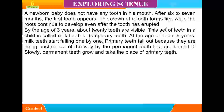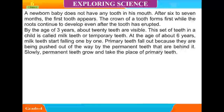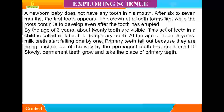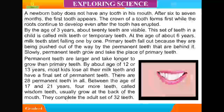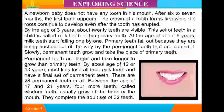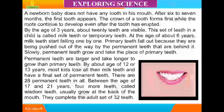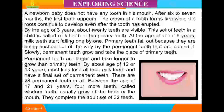At the age of about 6 years, milk teeth start falling one by one. Primary teeth fall out and slowly permanent teeth grow and take the place of primary teeth. Permanent teeth are larger and take longer to grow than primary teeth. By about the age of 12 or 13 years, most kids lose all their milk teeth and have a final set of permanent teeth.